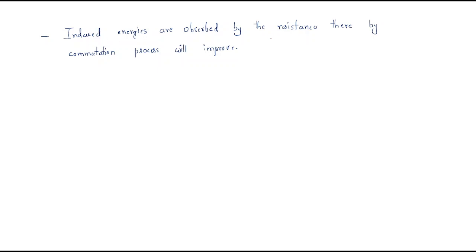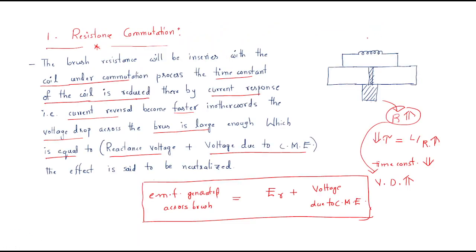The induced energies are absorbed by the resistance, thereby improving the commutation process. The inductor generates some EMF, and by connecting a high brush resistance, this complete induced EMF is absorbed across the resistance, so the complete voltage is neutralized.